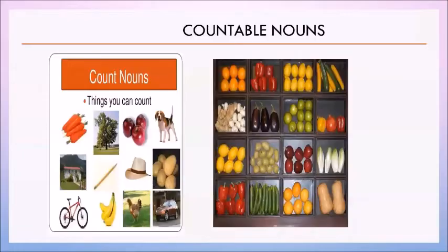Now let's see a picture presentation of countable nouns for better understanding. In this picture you can see many things, and you can easily tell me how many of each are present. If I ask you how many pencils are there, how many cucumbers, lemons, apples, dogs, trees — you can easily tell me in numbers because they can be counted. So countable nouns are things you can count easily.